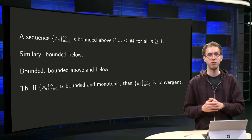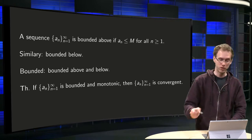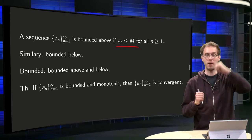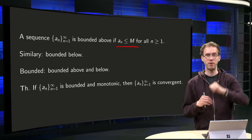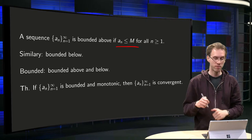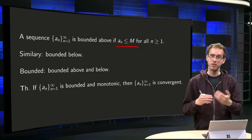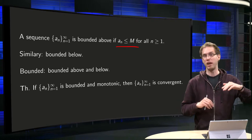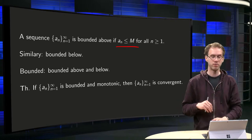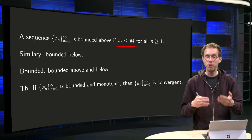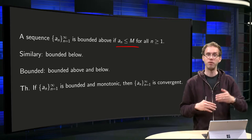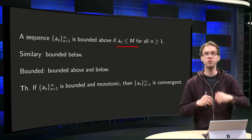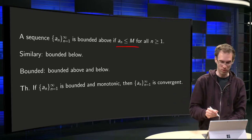So let's look at the boundedness first. A sequence is called bounded from above if the an are below some M for all n ≥ 1. Similarly, a sequence is bounded from below by some number if all elements an are above that number. A sequence is called bounded if it's bounded from above and below, so if all elements of a sequence are between two values.